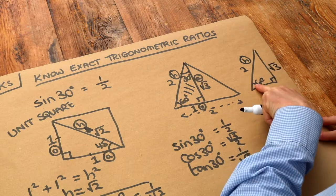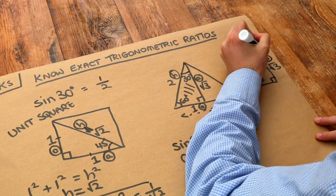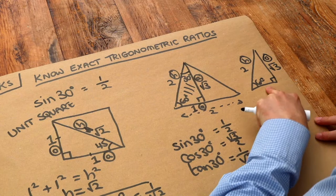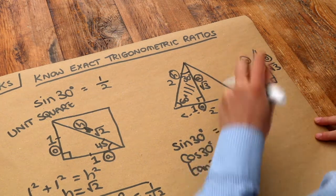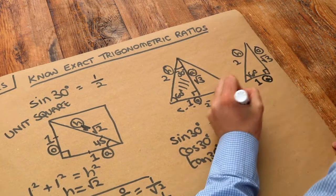Then we've got the root 3, which this time, because it's opposite the 60, the opposite is now here rather than the adjacent. And then this bottom side is adjacent to the 60, so that length of 1 that we had is now the adjacent.